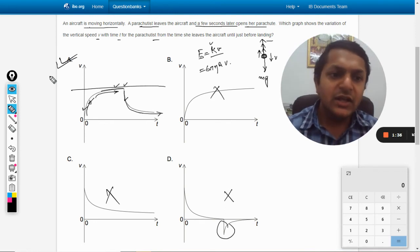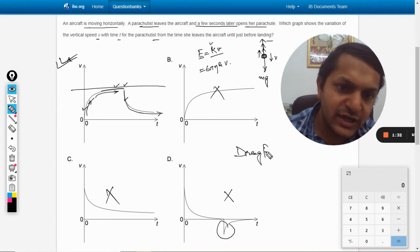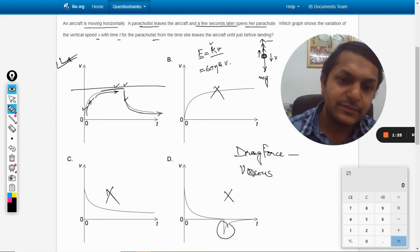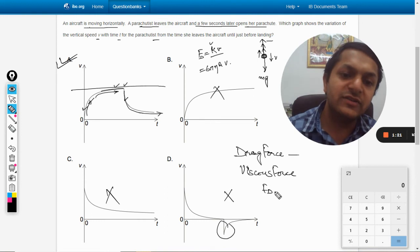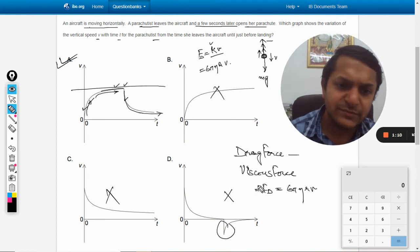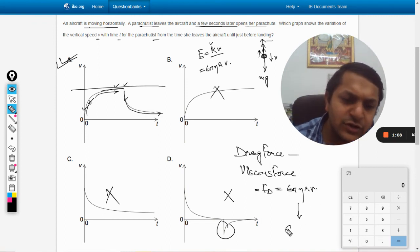In this question, the concept of drag force is used. This is a very important formula - this is known as viscous force. I don't know whether this is covered in your syllabus or by your teacher, but this formula is 6πηrv. Drag force and viscous force are the same thing. η is known as coefficient of viscosity.